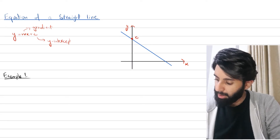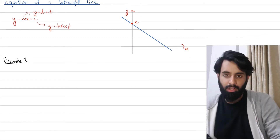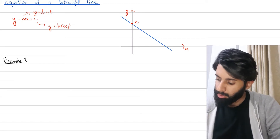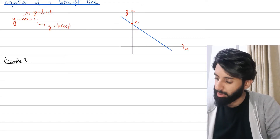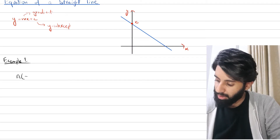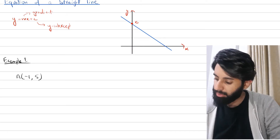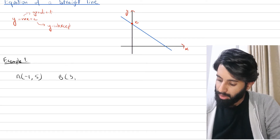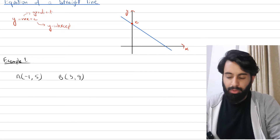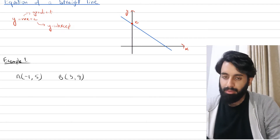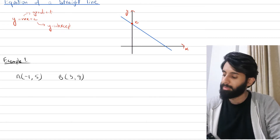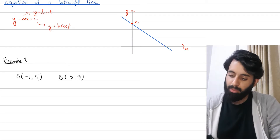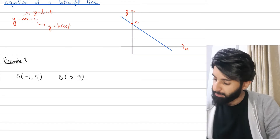There are multiple cases through which you may be asked to figure out the equation of a straight line. One of them is that you're given two points through which the line is passing. Suppose A is (−1, 5) and B is (3, 9). You want to find out the equation of the line that passes through A and B. Step one is to find out what the gradient of line AB is going to be.